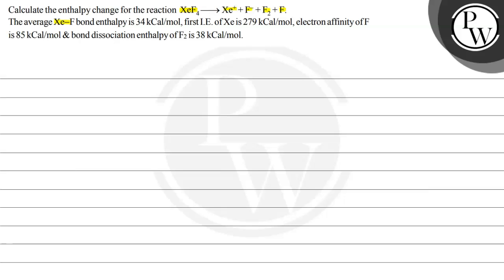The average XeF bond enthalpy is 34 kilocalorie per mole. First ionization enthalpy of Xe is 279 kilocalorie per mole. Electron affinity of F is 85 kilocalorie per mole and the bond dissociation enthalpy of F2 is 38 kilocalorie per mole.